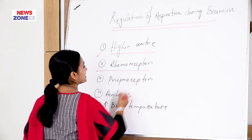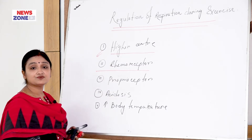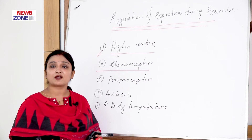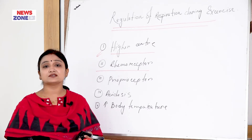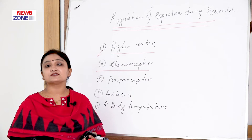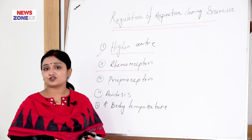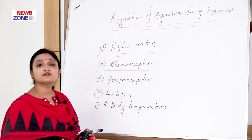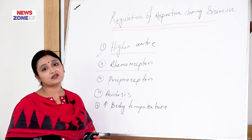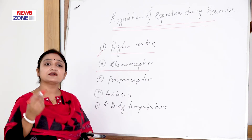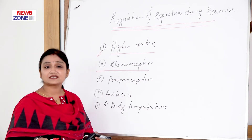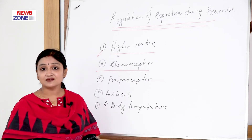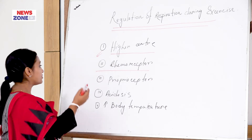The second point is the chemoreceptor. During exercise, there are chemical changes: the partial pressure of carbon dioxide increases, hydrogen ion concentration increases, and there is hypoxia — a decrease in the partial pressure of oxygen. These chemical changes stimulate the chemoreceptors, which then send afferent somatic signals to the respiratory center and increase the rate and depth of respiration.